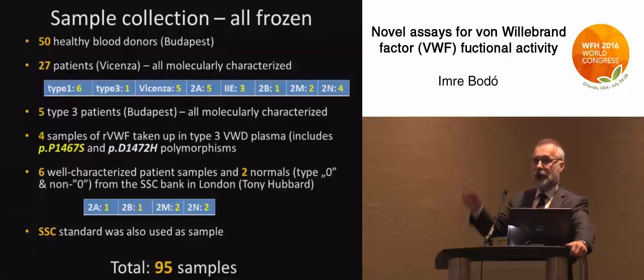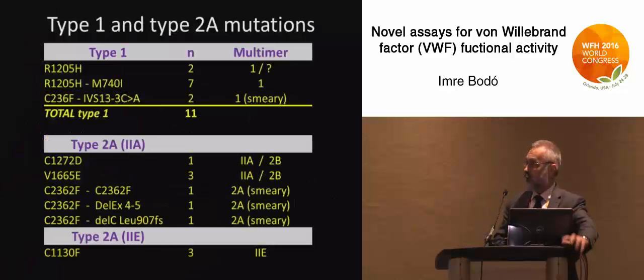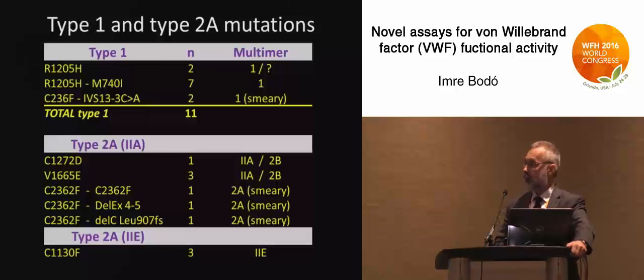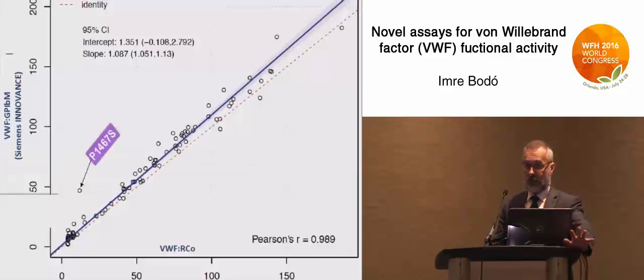Every laboratory received the same set of blinded samples — almost 100 of them. The distribution included normal samples and patient samples. Notably, the 1467 variant was included as a recombinant protein spiked into a type 3 plasma. Every sample chosen was from a molecularly characterized patient, so we knew exactly what they had: 11 type 1 and a total of 21 type 2 patients, in addition to normal controls and type 3 samples.